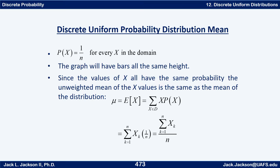Normally in a discrete distribution you have to weight that average by the different probabilities — that's why you have the probability of x, the PDF function. It weights them based on probabilities or relative frequencies. We need that normally, but since they all have the same probability we can just do a mean of the x's.